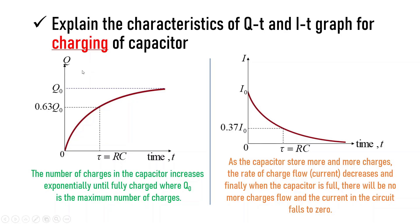Here we have the graphs of Q against t and I against t. For Q against t, the number of charges in the capacitor increases exponentially until fully charged, where Q₀ is the maximum number of charges as you can see from the shape of the graph here.